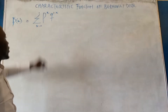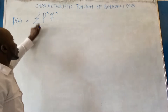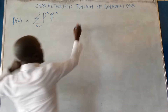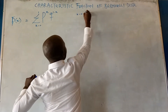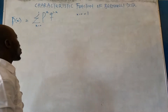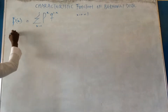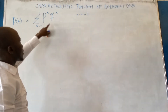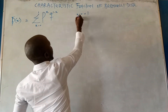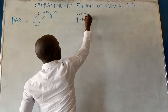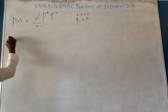In the Bernoulli distribution, X can only assume the value of 0 or 1. X can be 0 or 1; we cannot take more than 1. We have P to be the probability of success and Q the probability of failure. Q equals 1 minus P.